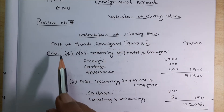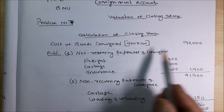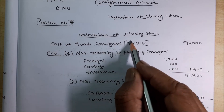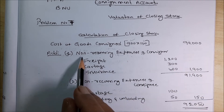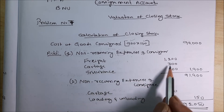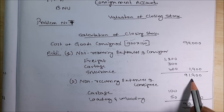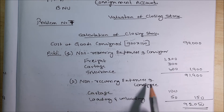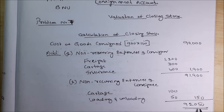Calculation of closing stock. At end of accounting period, 20 bicycles remained unsold, meaning 80 were sold. Cost of goods consigned: 900 into 100 equals 90,000. Add non-recurring expenses of consignor — freight 1200, cartage 300, insurance 400, totalling 1900. Then 91,900. Add non-recurring expenses of consignee — cartage 100, loading and unloading 50, totalling 150. Total cost of 100 bicycles is 92,050.